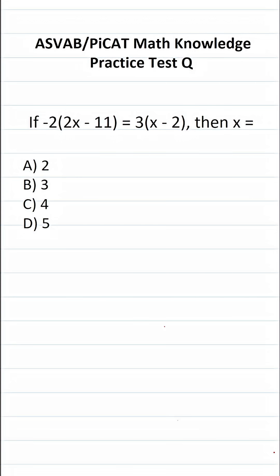This math knowledge practice test question for the ASVAB and PiCAT says, if negative 2 times 2x minus 11 equals 3 times x minus 2, then x equals. For this problem, we're being asked to solve the equation for x, that is to say we want to get x equal to something by itself.